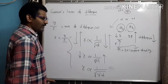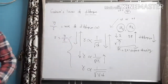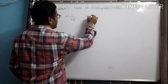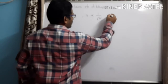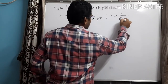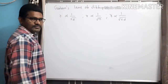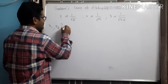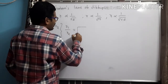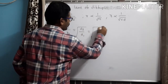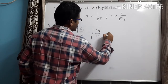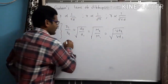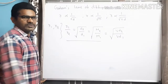By combining these three equations — R ∝ 1/√d, R ∝ 1/√M, and R ∝ 1/√Vd — when comparing two different gases with rate of diffusions R1 and R2, we get: R1/R2 = √(d2/d1) = √(M2/M1) = √(Vd2/Vd1). This combined equation is very important and will be used to solve examples.